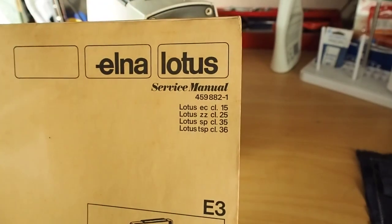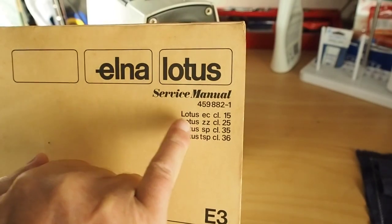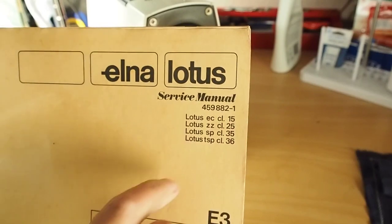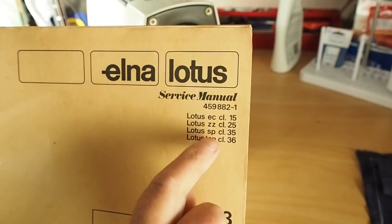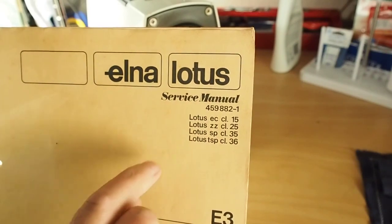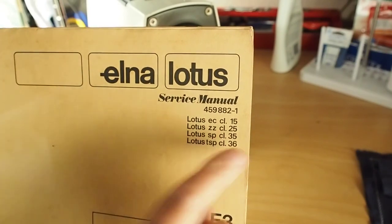If we have a look at the service manual here, here are the different class types. You've got the EC which is class 15, ZZ which is class 25, SP class 35, and TSP class 36.